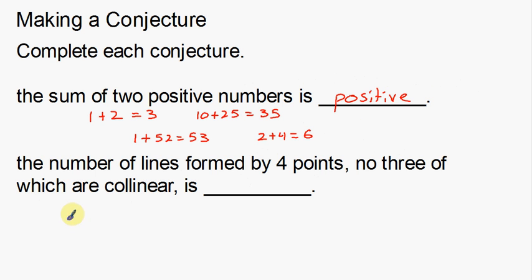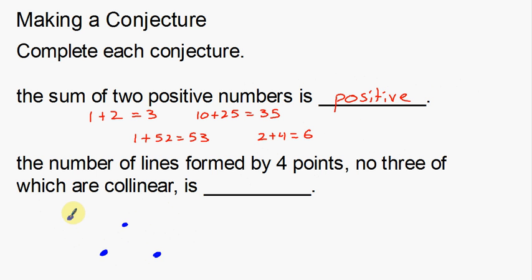I have four points. Here's a point, and here's another point. I can't arrange three in a straight line because of the 'no three collinear' condition. Here's another point, and let's put our fourth point here — try not to make straight lines. Now I need to start at a point and make lines to figure out how many are formed. Starting here, there's line one, two, and three.